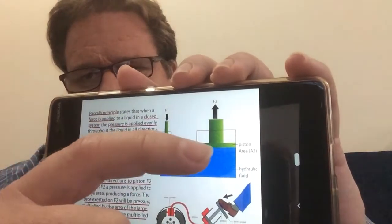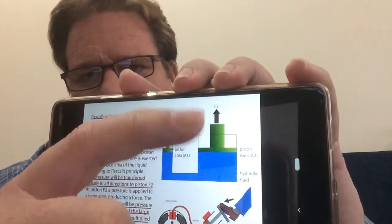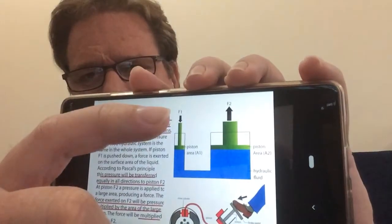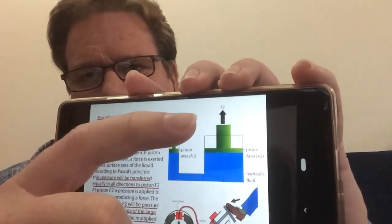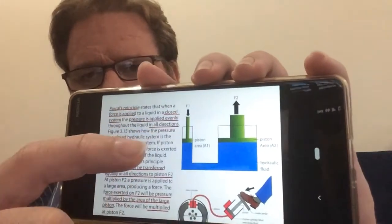A lot heavier. So we get this multiplication effect—we get this mechanical advantage that we can take advantage of.